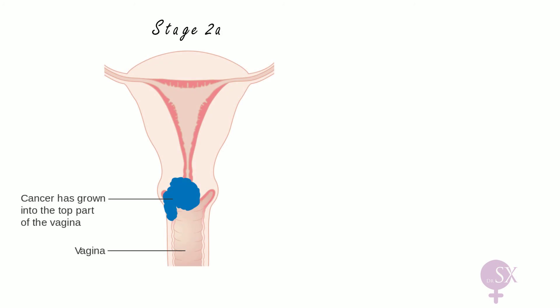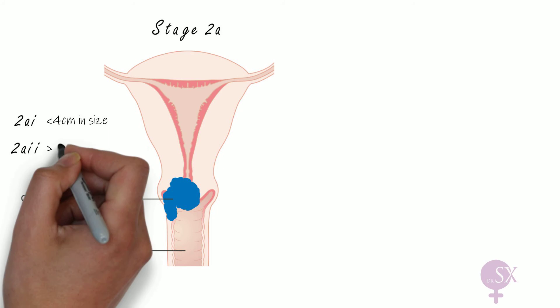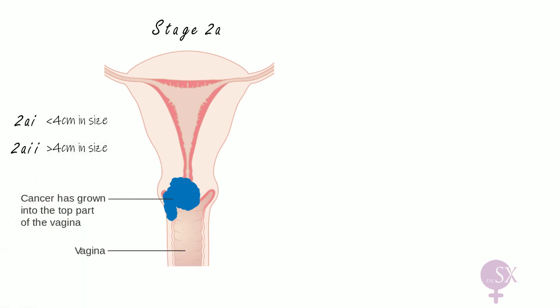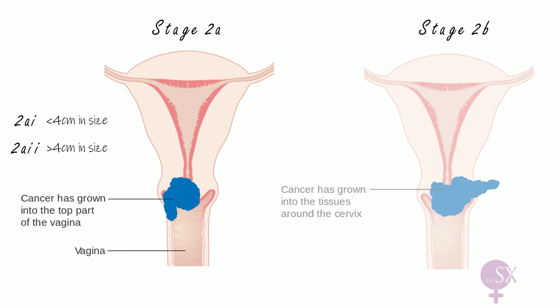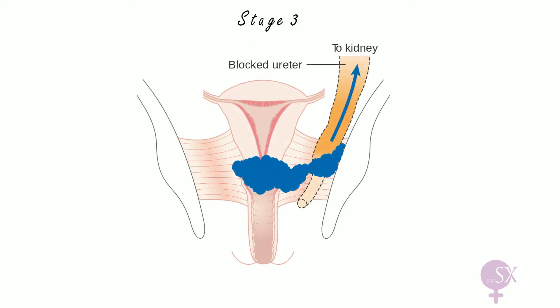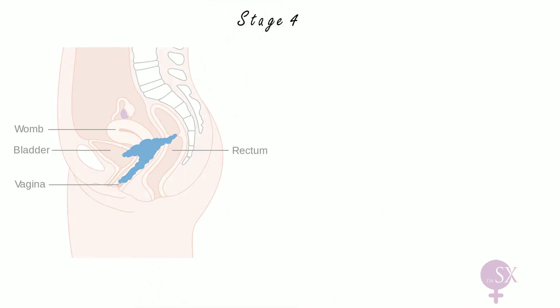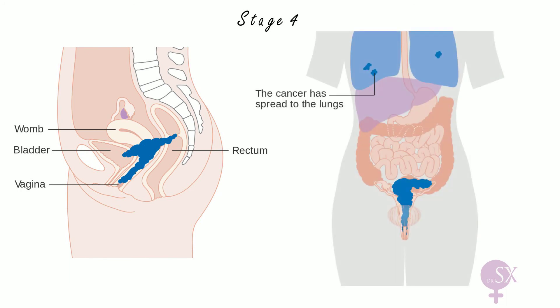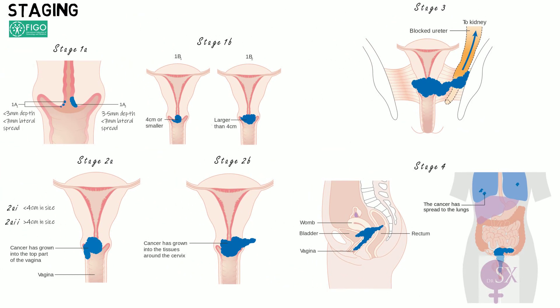In stage 2, the cancer starts invading into the vagina and pelvic side wall. In stage 2a1, it has invaded the upper two-thirds of the vagina without side wall invasion and is less than 4 cm; in stage 2a2, it is larger than 4 cm. In stage 2b, the cancer has invaded the pelvic side wall. In stage 3, it has invaded the lower vagina or pelvic side wall and may cause ureteric obstruction. In stage 4, the cancer has invaded the bladder or rectal mucosa, or spread beyond the true pelvis.